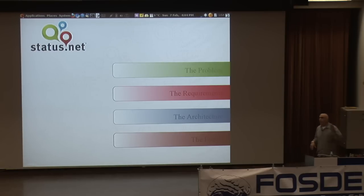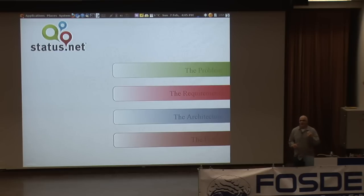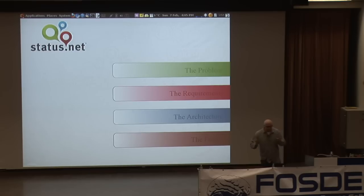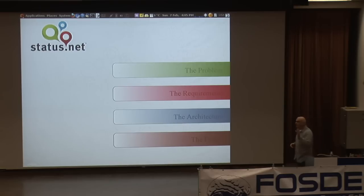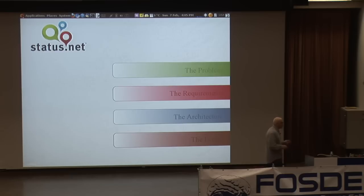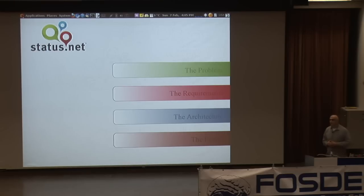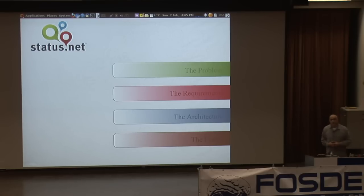I'm going to go through four parts in this talk. The first one is about the problem that StatusNet tries to address. The second is about the requirements — factoring down what we really wanted to have come out of the StatusNet project. Third and the very longest part is the architecture of StatusNet, the different parts, how they work together, and that's specifically where I get into the scaling issues. Finally, I'm going to talk about the future and where StatusNet is going.